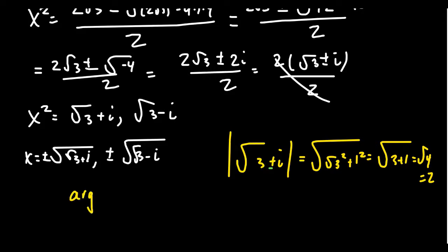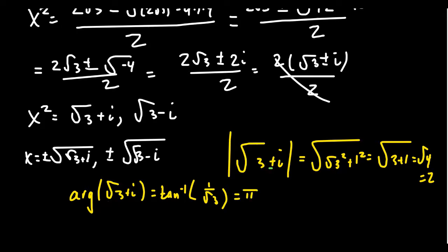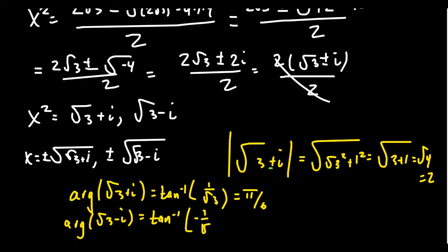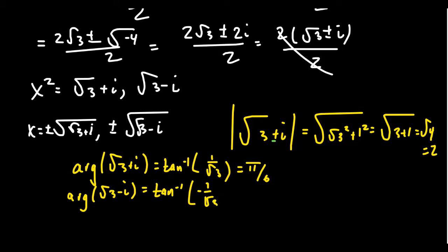If we compute the argument of root 3 plus i, we need the arctangent of 1 over root 3. This happens at pi over 6, and we are in the first quadrant — positive, positive — so this gives us pi over 6. If we do the argument of root 3 minus i, that changes things mostly in terms of the quadrant. We get a negative 1 over root 3, referencing to pi over 6, but we're in the fourth quadrant now — positive, negative. So the argument is 11 pi over 6.